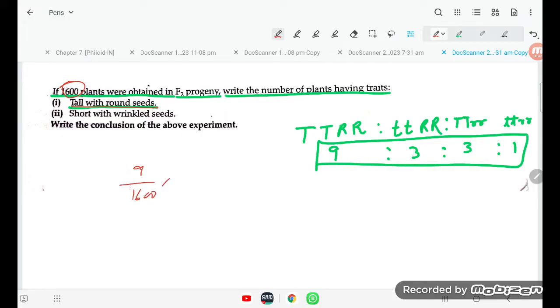Total seeds they are asking now, student. So, sorry, 9 upon total ratio, how much? 9 plus 3 plus 3 plus 1, that is 16.